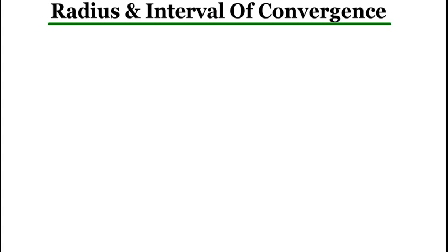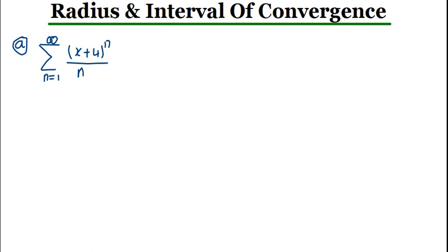The first example, let's call it A. We are given a series from N equals 1 to positive infinity: a rational expression X plus 4 to the power N, divided by N multiplied by 3 to the power N. The first thing we have to do is find the radius — we cannot find the interval of convergence without first finding the radius. The best method to find the radius of a series is by using the ratio test.